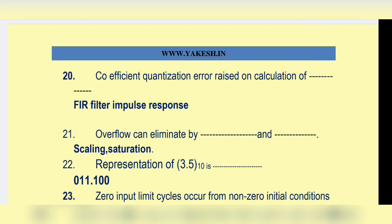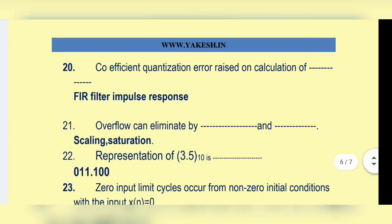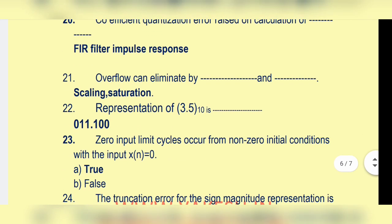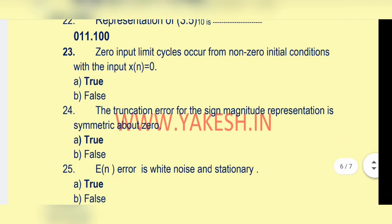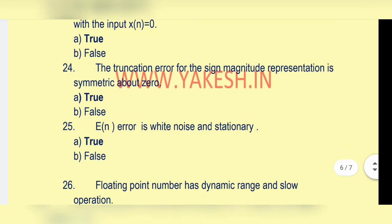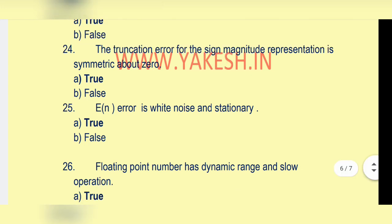Zero input limit cycle occurs from non-zero initial conditions with input x(n) equal to zero — true. Truncation error for a sign magnitude representation operates symmetrically about zero — option a: true. Error e(n) is white, nice, and stationary — option a: true.